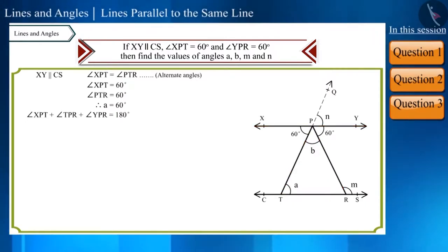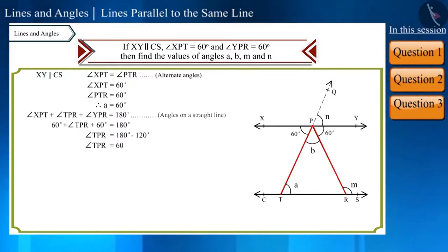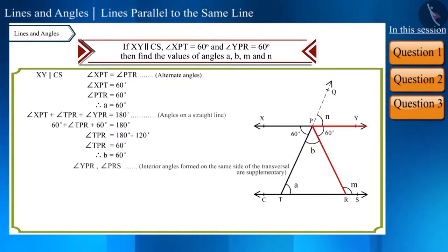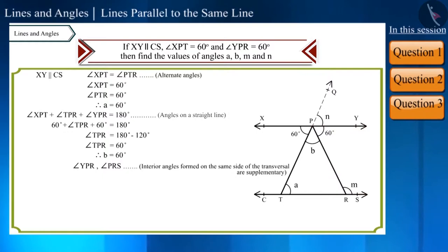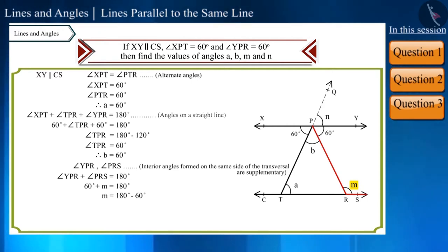Angle XPT, angle TPR, and angle YPR together sum to 180 degrees as they are angles around a straight line. We know the values of angle XPT and angle YPR, so by solving we can find the value of angle B. Angle YPR and angle PRS are interior angles on the same side of the transversal, so they are supplementary and their sum is 180 degrees. Since angle YPR is 60 degrees and angle PRS is M, we find M to be 120 degrees.